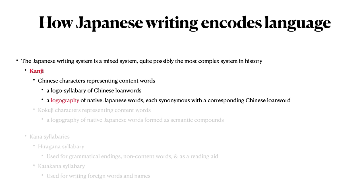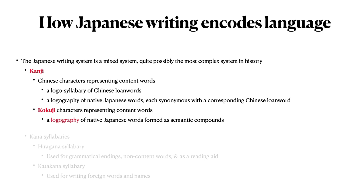A subset of kanji symbols are native Japanese symbols — that is, symbols that were created in Japan to represent new content words. These are called kokuji symbols, and they too are a logography. There are relatively few kokuji symbols. These symbols represent native Japanese words formed primarily through semantic compounding.